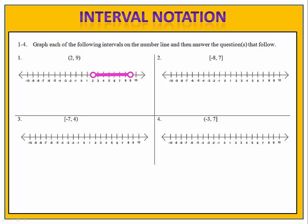In exercise 1, we are going between positive 2 and positive 9. Positive 2 has a parenthesis — that's an open circle, so the number 2 is not included in the set. 9 also has a parenthesis, which indicates an open circle on the number line. The number 9 is not included in this set; however, all values between 2 and 9 are.